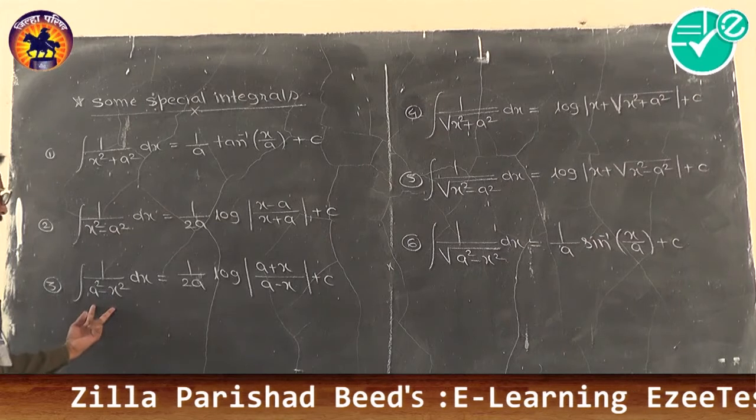Problem 14: integration of 1/(2x² + 3x + 5) dx. Here the coefficient of x² is 2, which is not ±1, so it is prime duty to take 2 common. After factoring out 2: 1/2 · ∫1/(x² + (3/2)x + 5/2) dx.